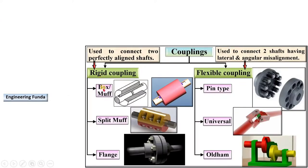Here you can see Box Coupling or Muff Coupling is a category of Rigid Coupling and is used to connect two perfectly aligned shafts. Here you can see these both shafts are perfectly aligned.